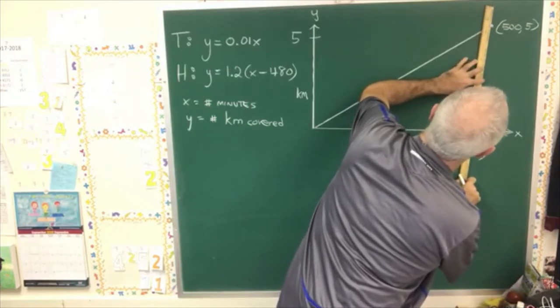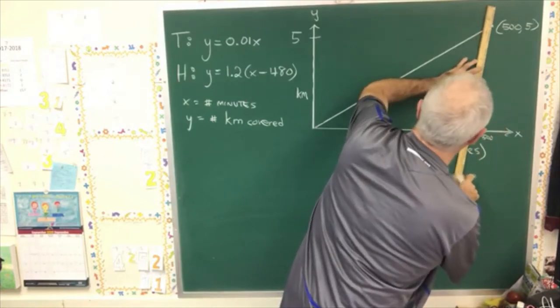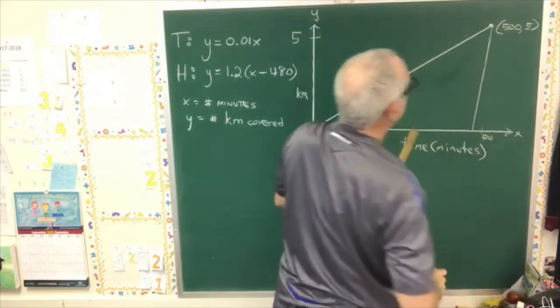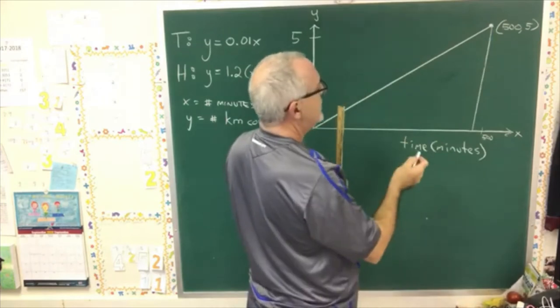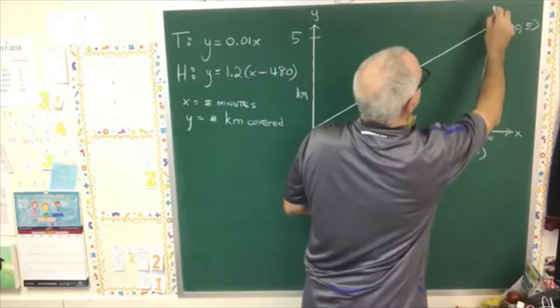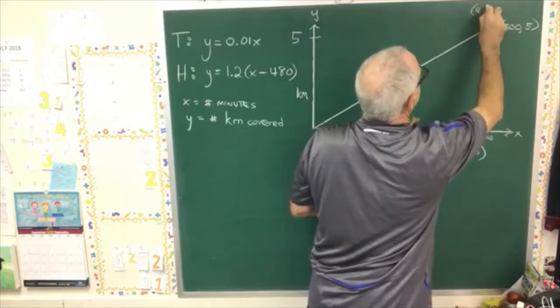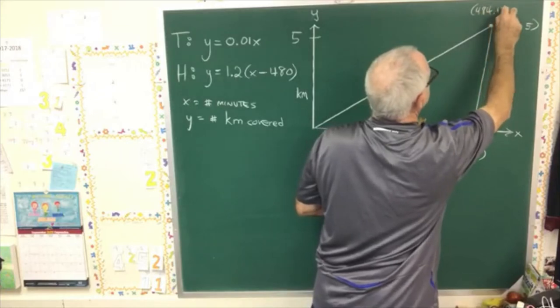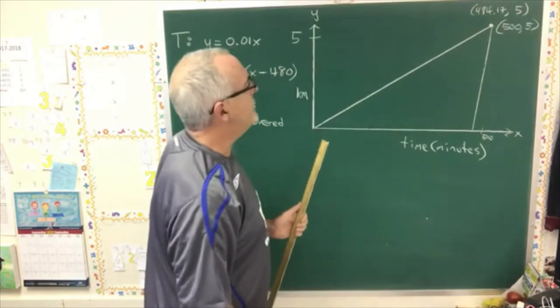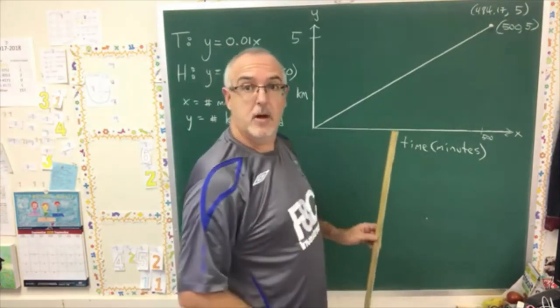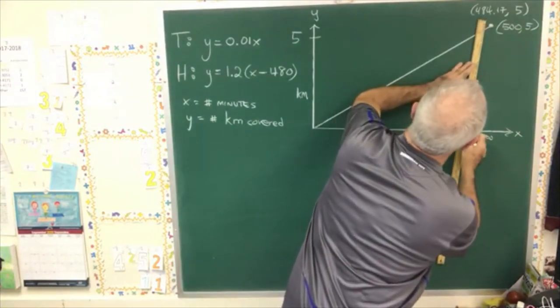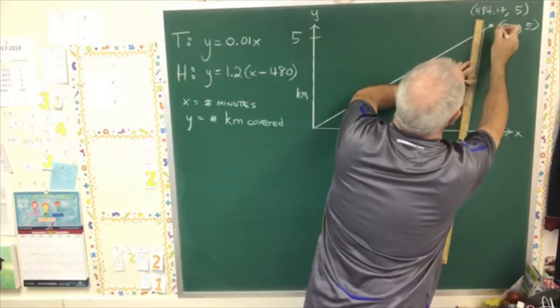The hare starts at 480 and has an x of 484.17, and, of course, a y of 5 when he crosses the finish line. Okay, I screwed up the first time I tried to draw the line. So, I'm trying again. It looks more like this.